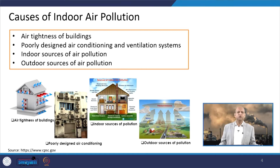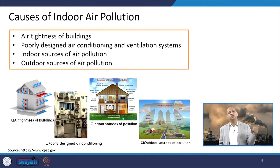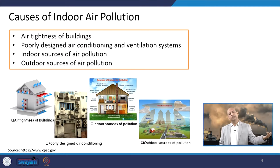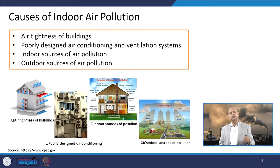Poorly designed air conditioning or ventilation systems also add to air pollution in the micro environment of buildings. Indoor sources may include the kitchen or other activities, and even furniture or paints can emit passive emissions. Outdoor sources of air pollution can also contribute to the indoor environment — whenever we open a window or door, air from outside enters, and if there are significant outdoor sources polluting the ambient air, that air can rush into the building and add to indoor air pollution.